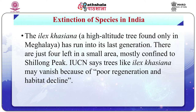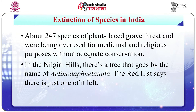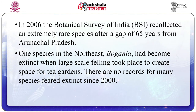Trees like Ilex cassiana may vanish due to poor regeneration and habitat decline. About 247 plant species face grave threat from overuse for medicinal and religious purposes without adequate conservation. In the Nilgiri Hills, the tree Actinodaphne obovata has just one individual remaining. In 2006, the Botanical Survey of India re-collected an extremely rare species after a gap of 65 years from Arunachal Pradesh. One species in the Northeast — Bonganiya — became extinct when large-scale felling took place to create space for tea gardens, with no records for many species feared extinct since 2000.